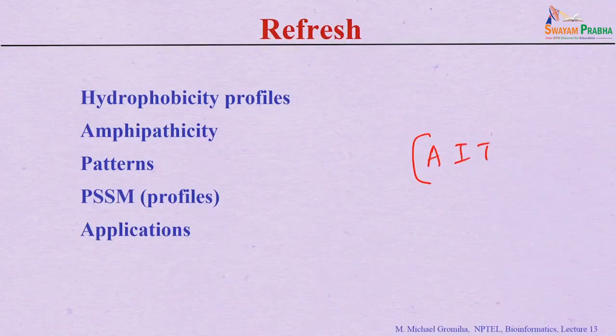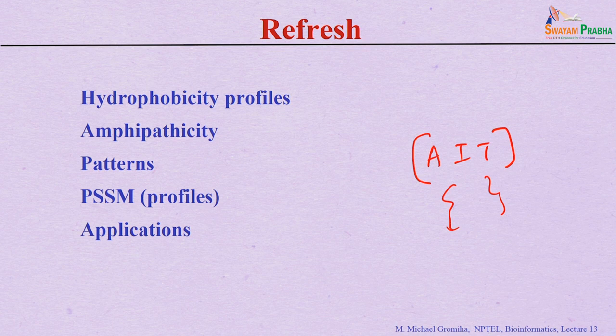We discussed patterns, where patterns are defined with symbols. For example, square brackets mean you can include any amino acids given within the bracket — if you have a square bracket with A, I, T, any residue within this group is allowed. If it is curly brackets, the residues inside are not allowed at that particular position. Likewise, you can make motifs and search databases like UniProt. Patterns and motifs are important for several functions.